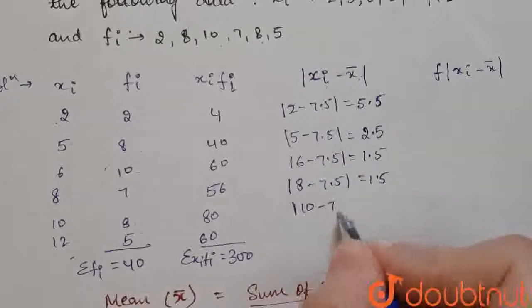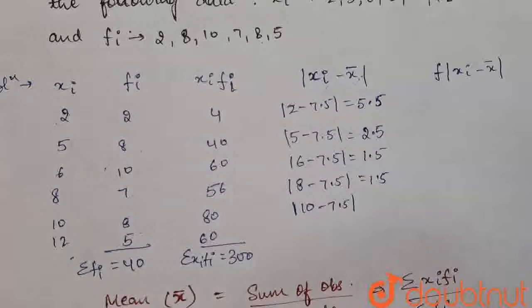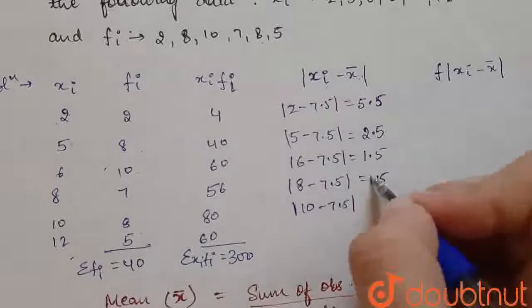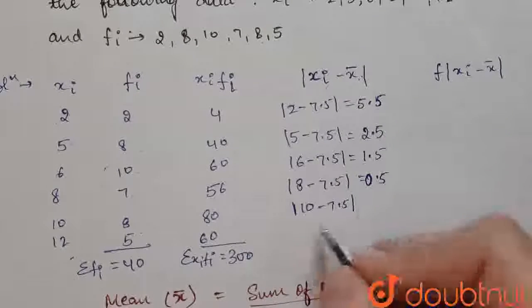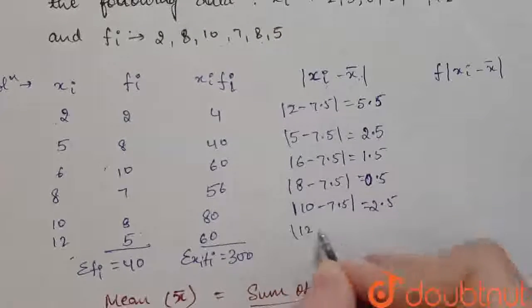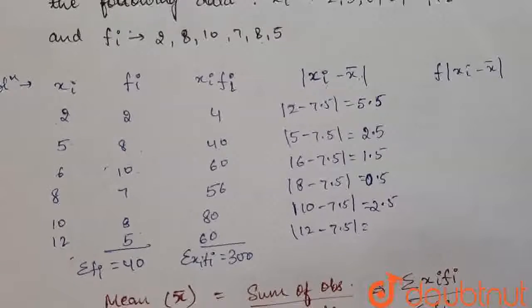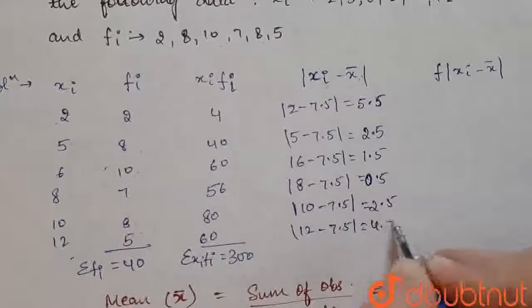10 minus 7.5, 2.5 and 12 minus 7.5, it is 4.5.